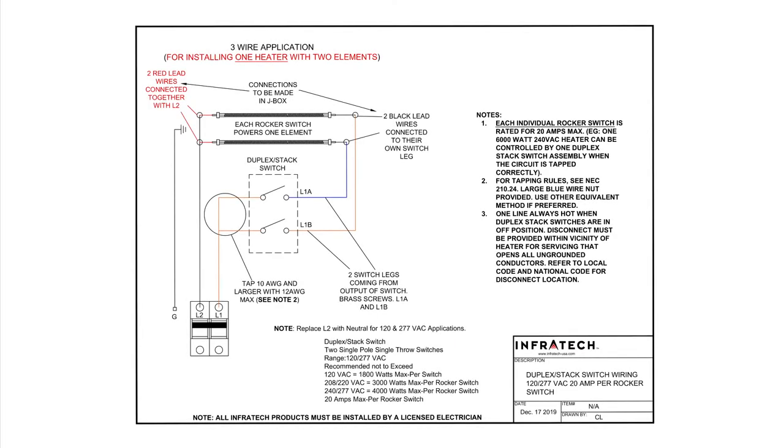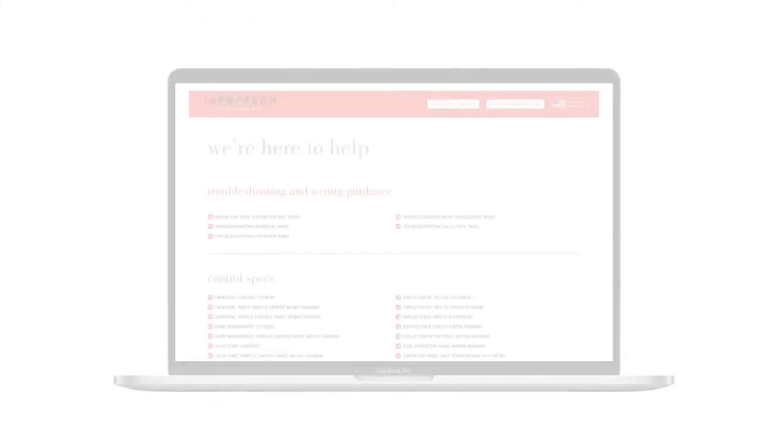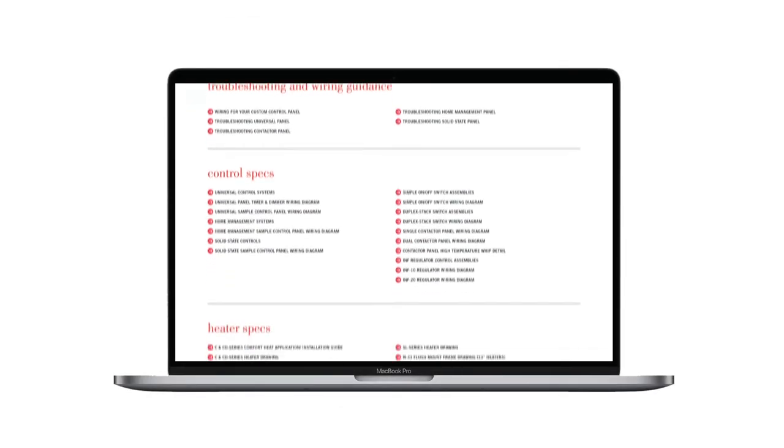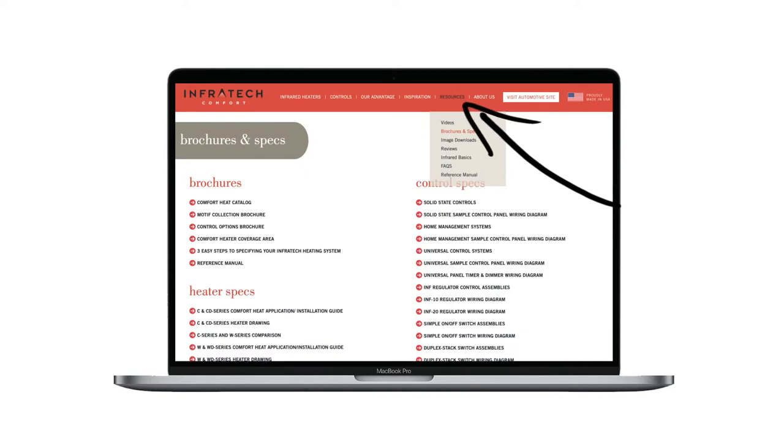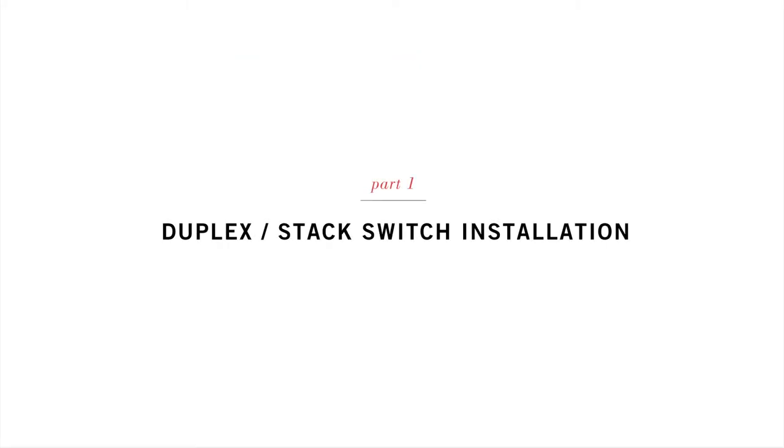Now let's begin by referring to the wiring diagram that came with this product. You can also download the wiring diagram from Infratech's technical support page or from the brochures and specs page under the resource tab on the Infratech website. Once you have the wiring diagram, you can begin installation.